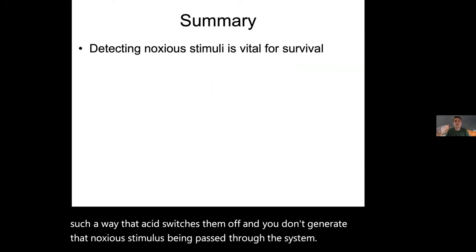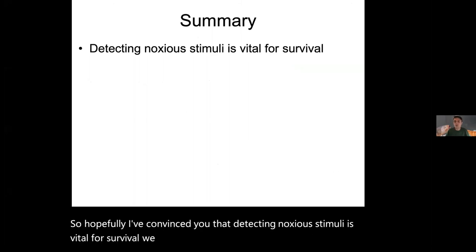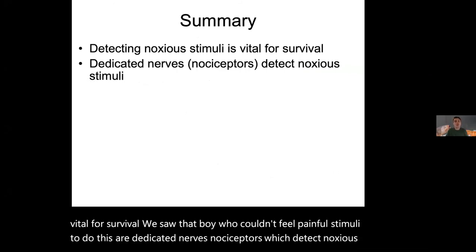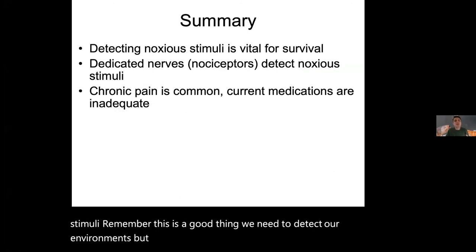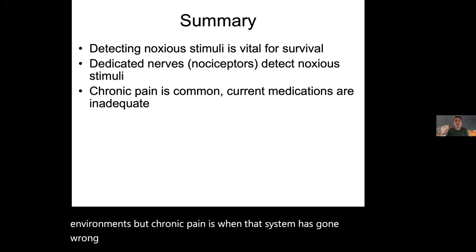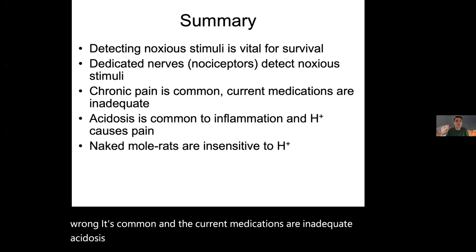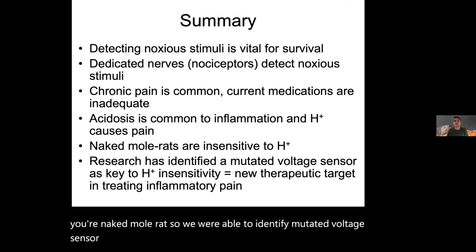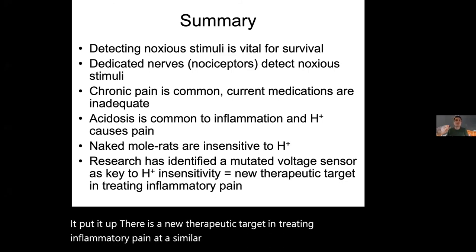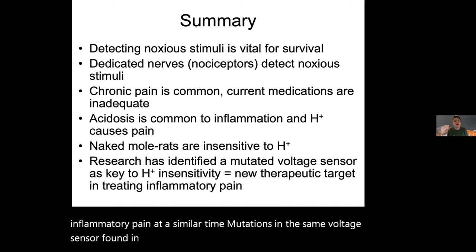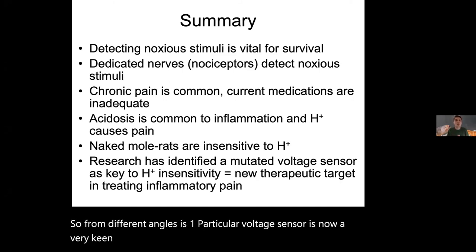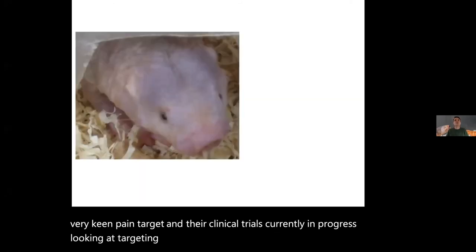To summarise: detecting noxious stimuli is vital for survival — we saw the boy who couldn't feel pain. Dedicated nociceptor nerves detect noxious stimuli, and this is a good thing — we need to detect our environment. Chronic pain is when that system goes wrong; it's common, and current medications are inadequate. Acidosis is common to inflammation and acid causes pain — unless you're a naked mole rat. We identified a mutated voltage sensor key to acid insensitivity in naked mole rats, putting it forward as a new therapeutic target for inflammatory pain, now in clinical trials.